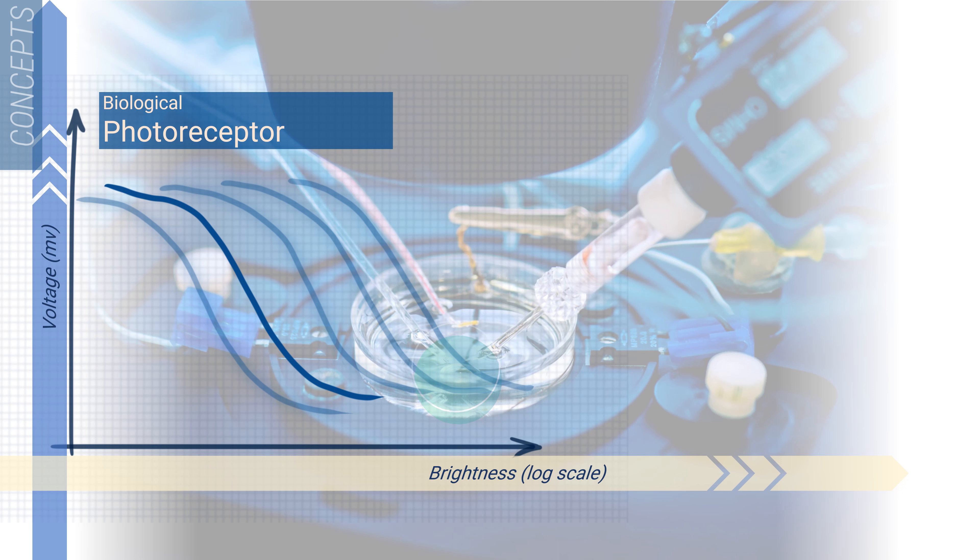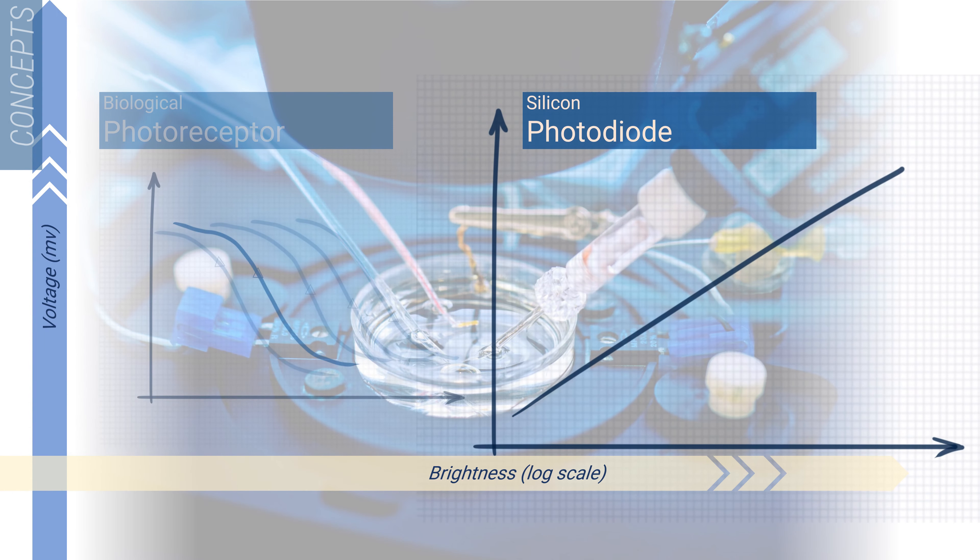Now let's examine the response of a common device element in its operating range: the photodiode. Side by side, we can see the two curves are similar, but not exact. They are similar in that the photodiode's voltage also tracks with changing levels of brightness. However, it has the opposite behavior to our biological photoreceptor. Towards the left of this graph, as things get darker, the photodiode's voltage decreases instead of increasing like its biological counterpart.